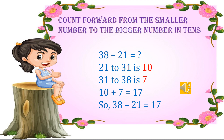Likewise, from 31 to 38, we need to count from 32: 32, 33, 34, 35, 36, 37, 38 — and we get 7. So from 31 to 38, we have a difference of 7. Finally, we need to add 10 and 7. So 10 plus 7 is equal to 17. Therefore, 38 minus 21 gives you 17.